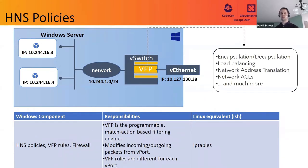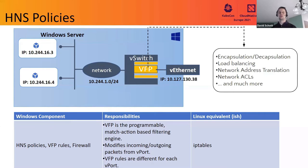The final missing piece is HNS Policies. These rely on VFP, which stands for Virtual Filtering Platform. This is essentially a virtual switch extension that allows us to define rules to process incoming and outgoing network traffic and apply actions to them. The HNS Policies resource is used to program VFP and plumb rules that can apply load balancing, network address translation, and much more to network traffic.